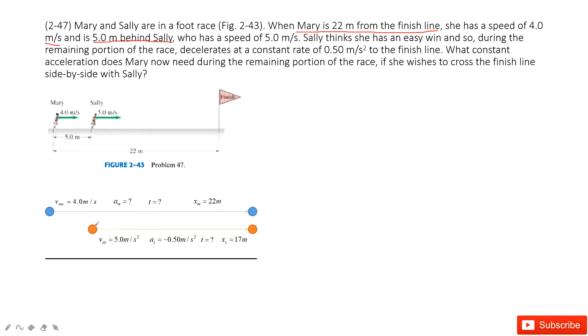5 meters behind Sally means the total displacement Sally needs to move is 17 meters, which is 22 subtract 5, equals 17 meters. Sally has a speed of 5 meters per second.